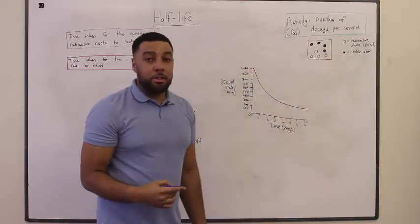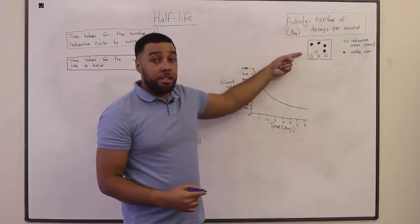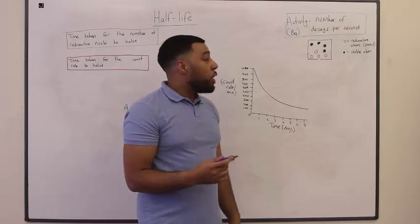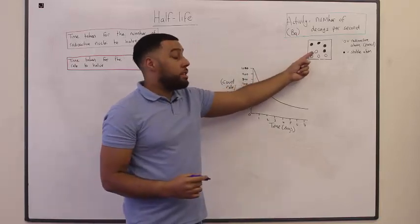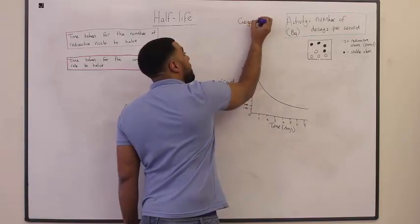And as you can see, as these atoms start to decay, the activity of the sample will start to decrease. We can monitor the activity of this sample using a Geiger counter.